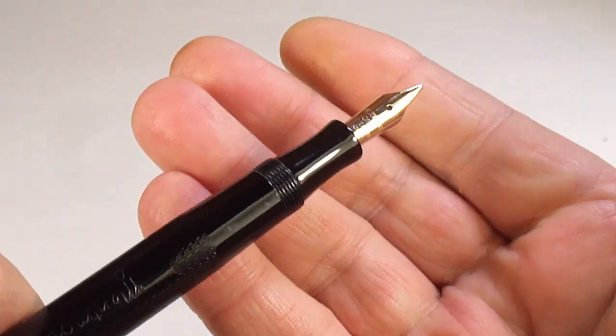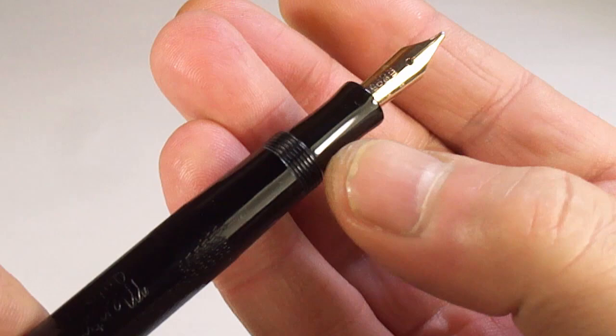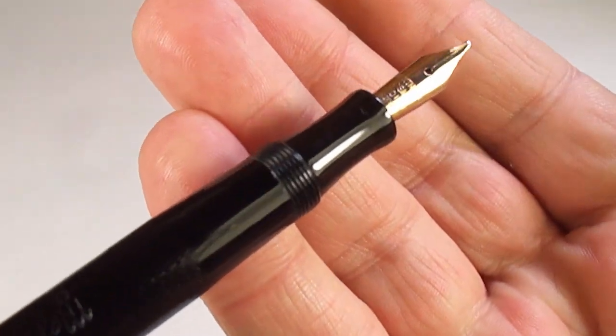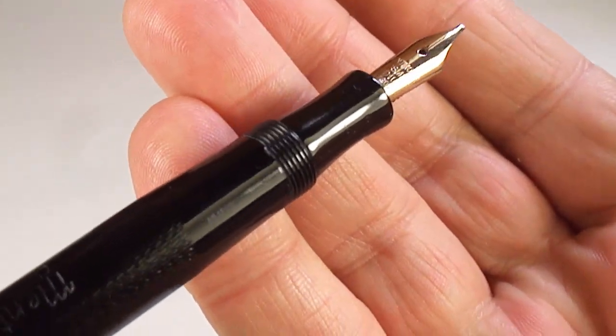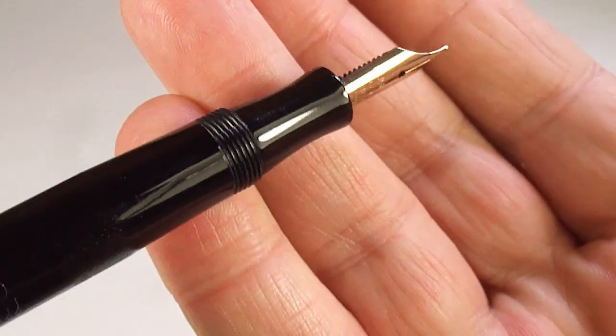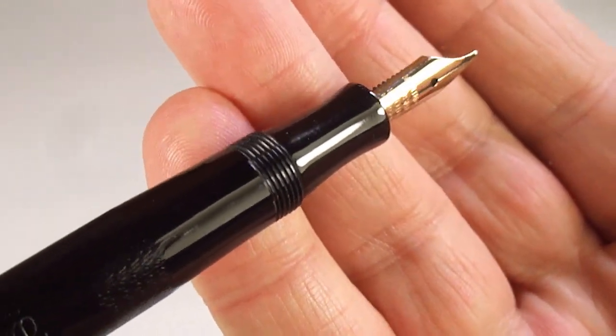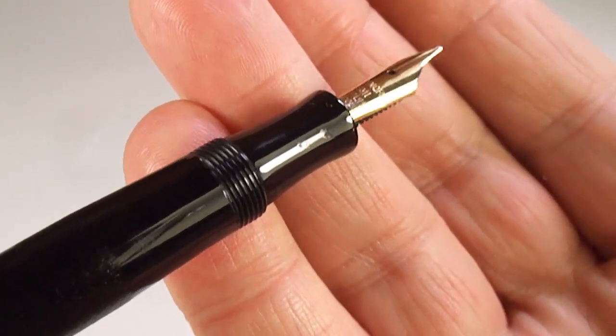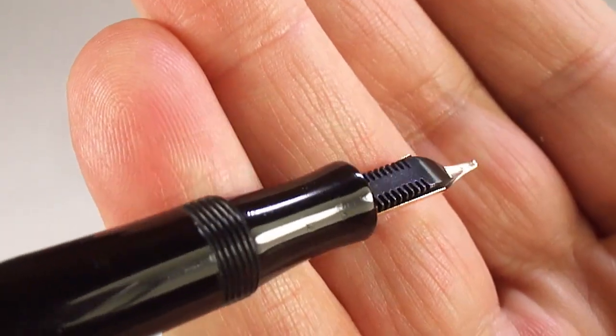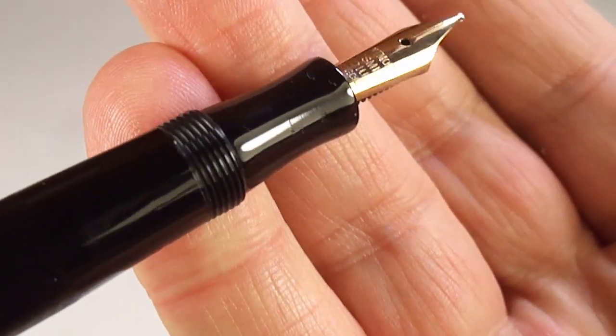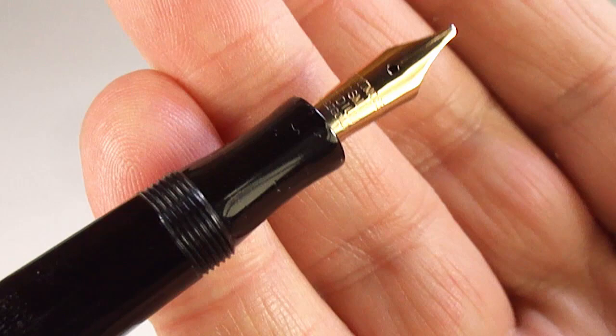You'll also notice on the before, that the section, unfortunately, somebody had the pliers to the section. What I've done is removed, filled, polished the section there. And it's lovely and clean and how it should be.